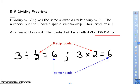So when we divide, there's an interesting relationship that we need to understand. It says dividing by half gives the same answer as multiplying by 2. The numbers half and 2 have a special relationship. Their product is 1. Now remember, product means to multiply. So if I take 1/2 times 2, and we know this can be written as 2 over 1, you're going to get 2 over 2, which is 1.